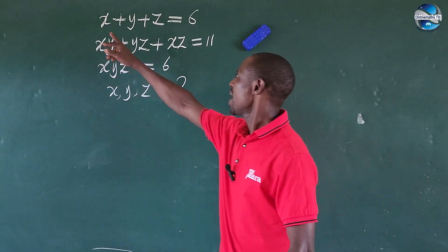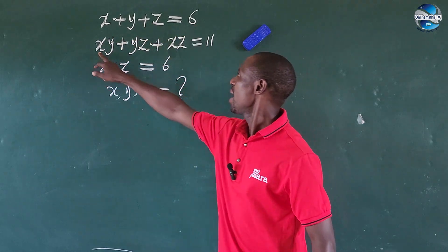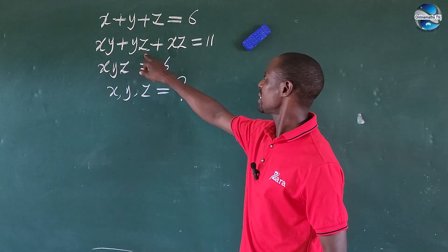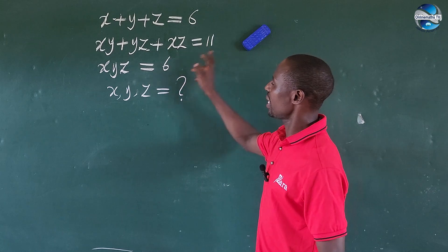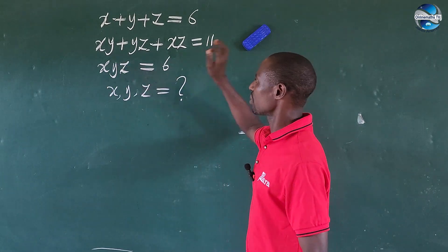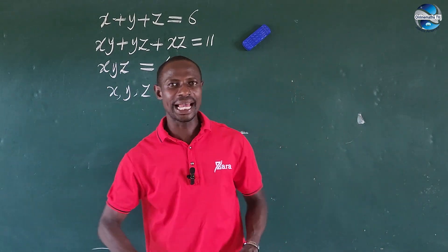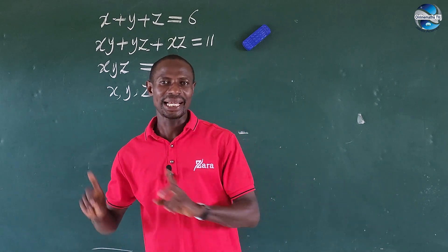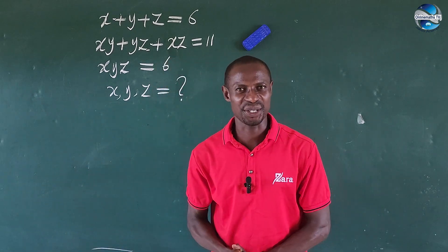The question is: x plus y plus z equals 6, xy plus yz plus xz equals 11, and xyz equals 6. How do we get the value of x, y, and z in this equation?